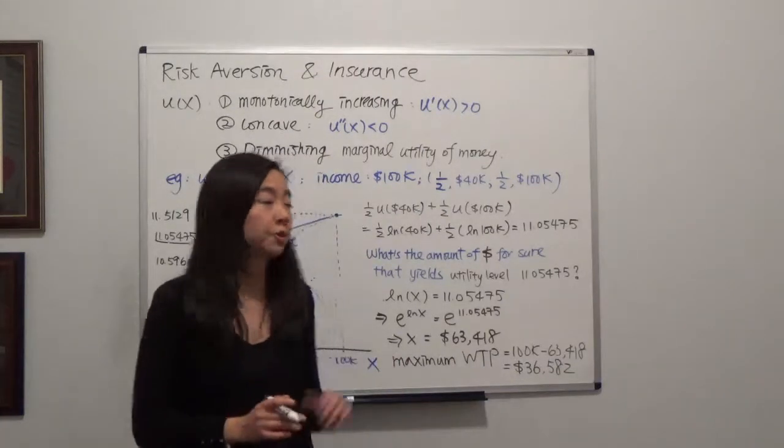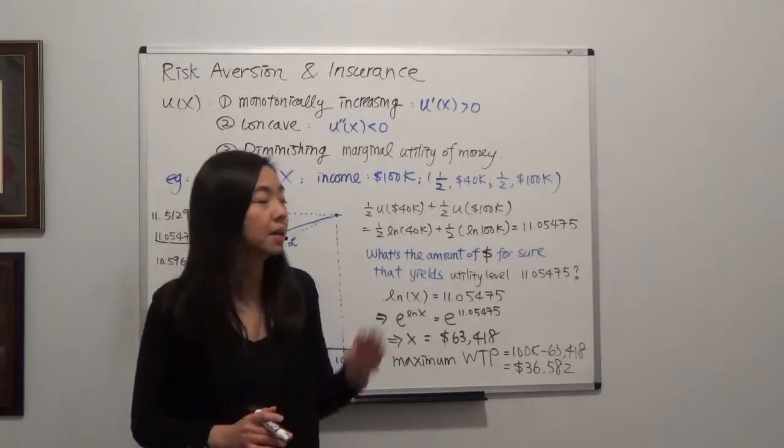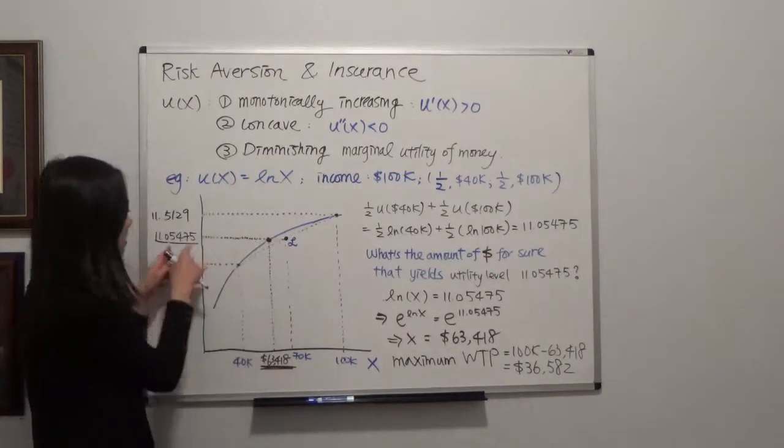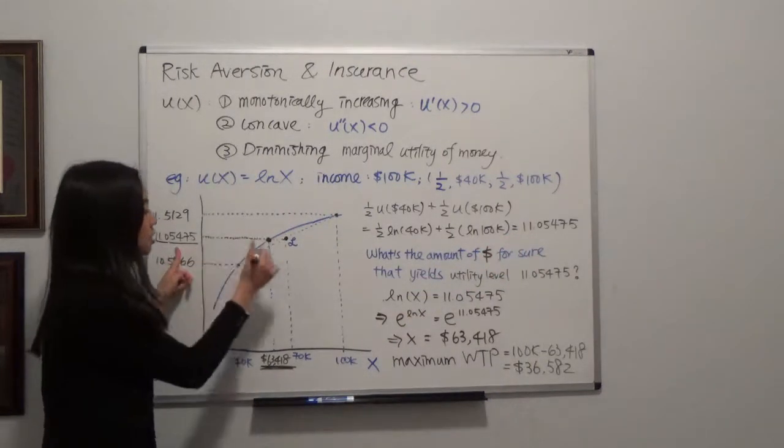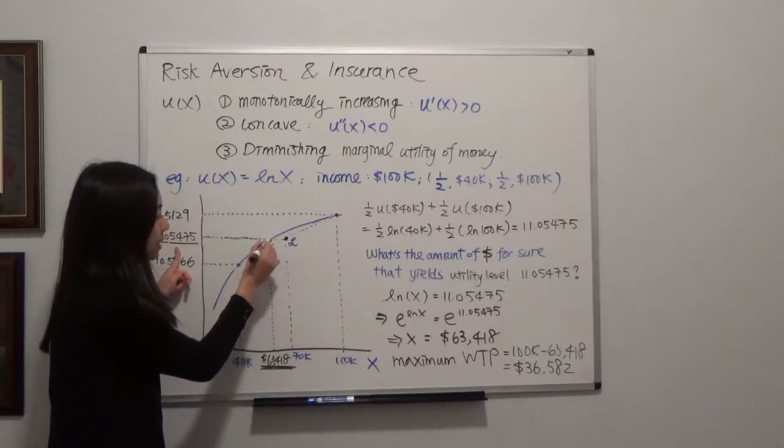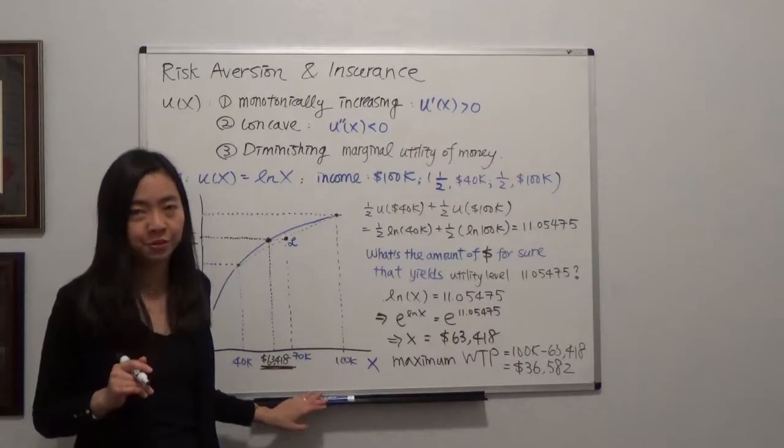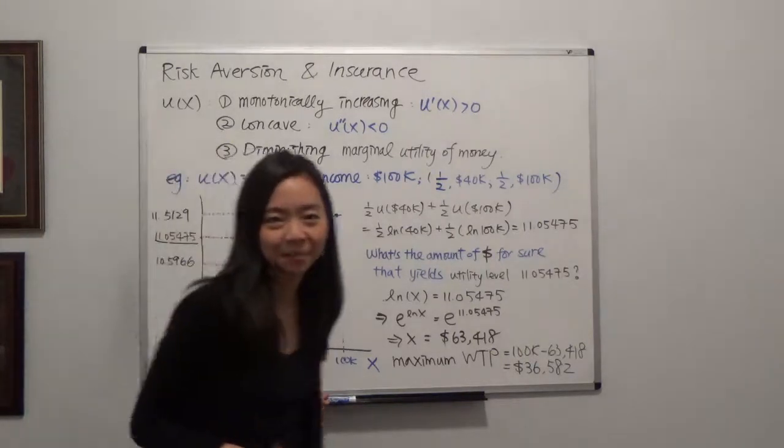I prefer to play this lottery because if I play the lottery, I can have at least this amount of utility. You need to make sure that I have at least this amount of utility. Otherwise, I'm not going to buy your insurance. So I hope this helps and I'll see you next time.